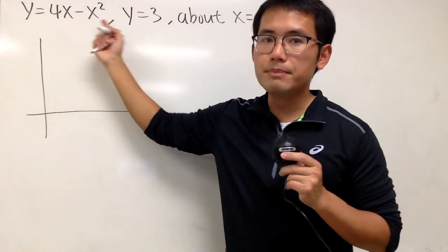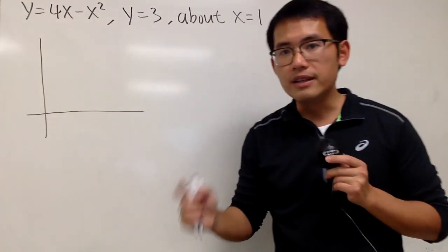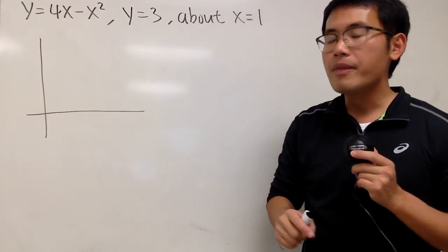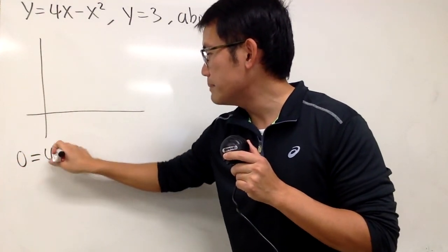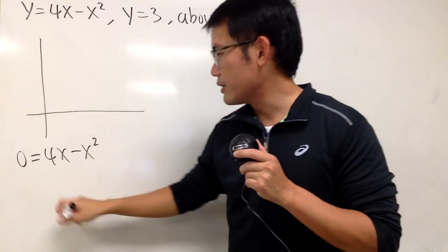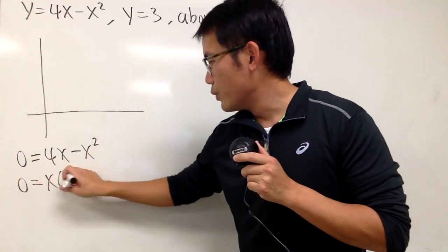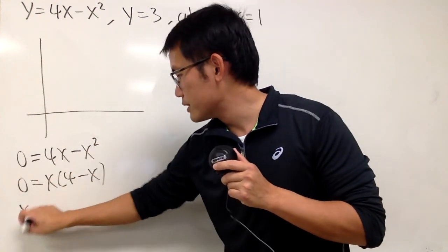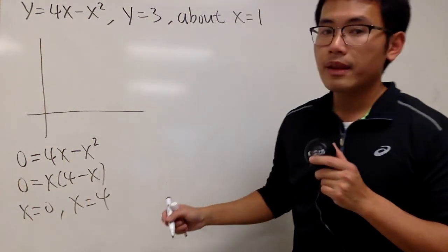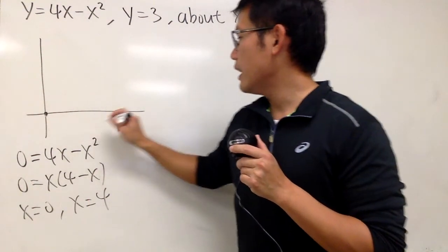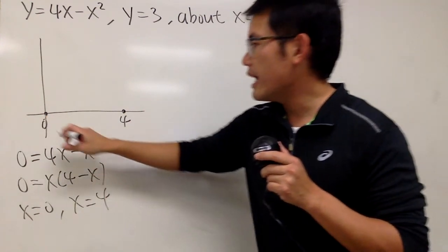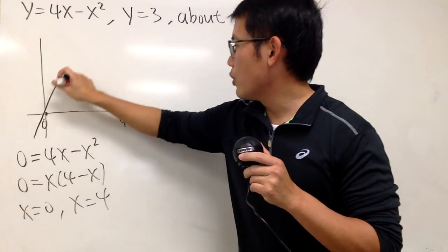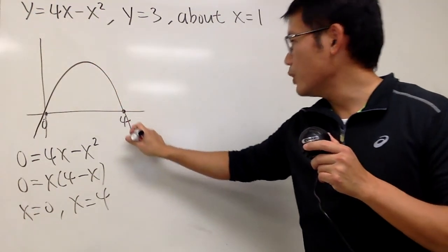As we can see, y equals 4x minus x squared. This is going to give us an upside-down parabola, and let's put 0 to be y first so we can find out the x-intercepts. So, let's factor out the x. We get x equals 0 and the other one is x equals 4. Here and here, this is going to tell us the x-intercepts, and then the parabola opens upside-down so it will look like this.